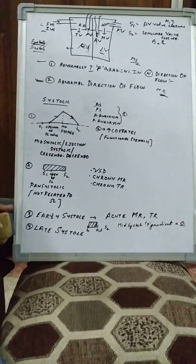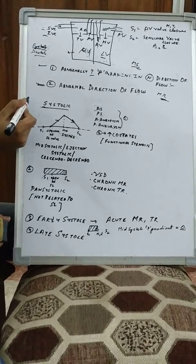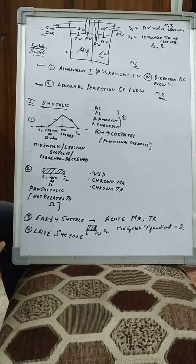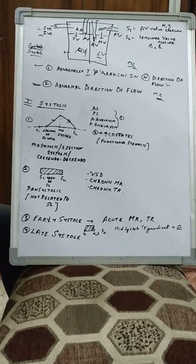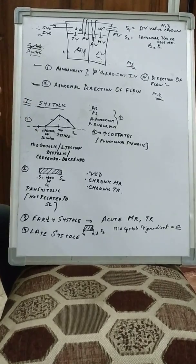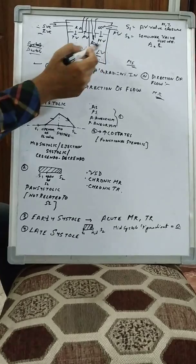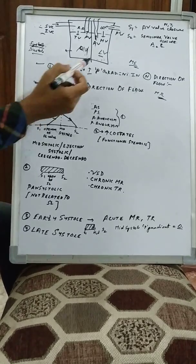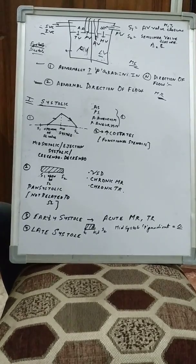To understand murmurs, we should know whether they occur in the systolic period, the diastolic period, or throughout. We categorize them into three parts: systolic murmur, diastolic murmur, and continuous murmur. In systole, the ventricle starts to contract. Initially the pressure is not very high and all valves are closed — both the mitral valve and aortic valve. There is contraction but volume does not change, which is known as isovolumetric contraction.